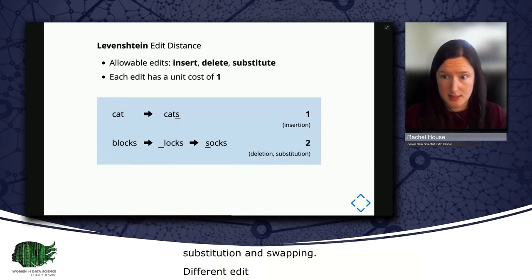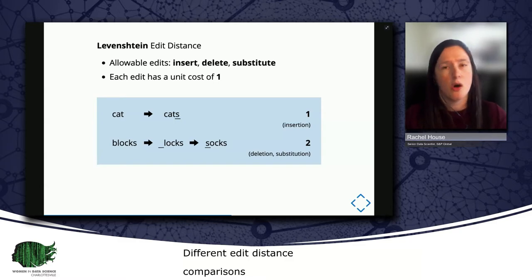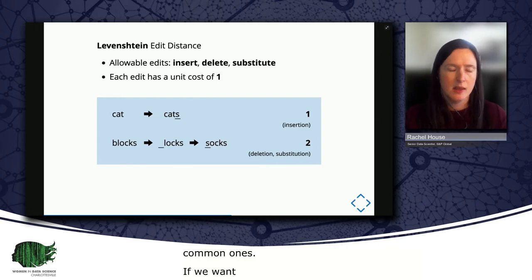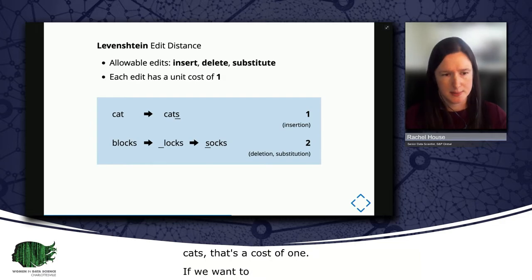Levenshtein edit distance is one of the more popular edit distances. Allowable operations are insertions, deletions, and substitutions, all with a default unit cost of one. So if we wanted to transform cat to cats, that would be a cost of one. We have a one character insertion. If we want to transform blocks to socks, that would be a cost of two, where we have a deletion and a substitution.